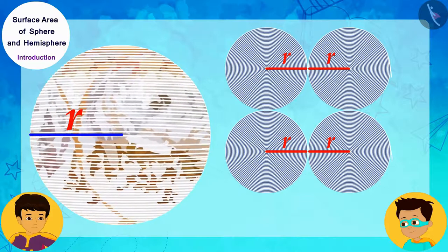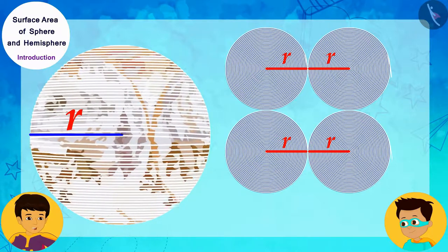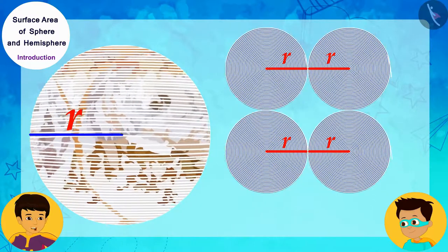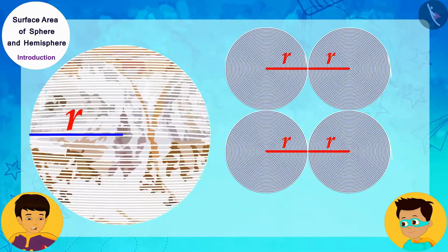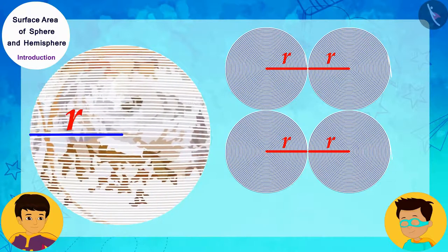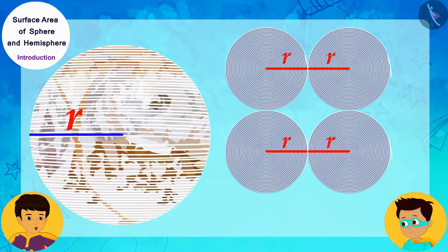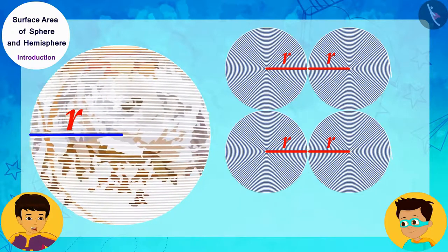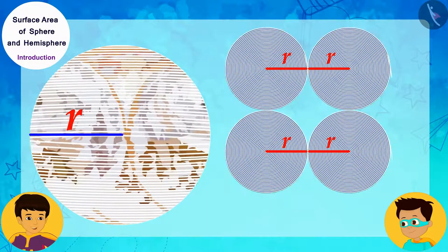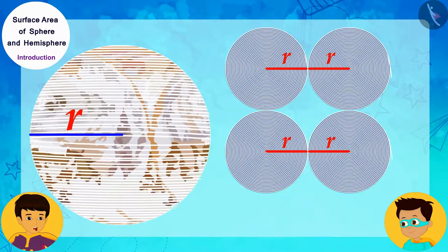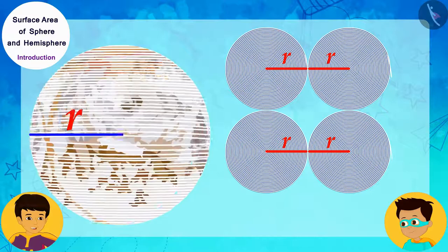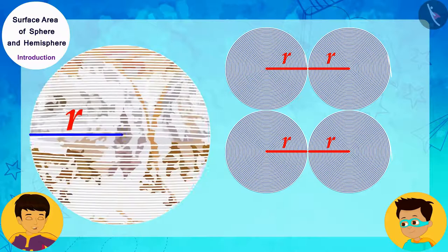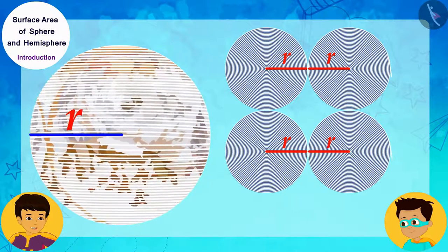Now, on a paper, if we make four circles with radius R of the sphere in this way and fill the circles by placing the string we had wrapped the spherical sweet with one by one. Then, we will find that the string which completely covered the surface of the sphere is now filling the surfaces of four circles with same radius as that of the sphere.